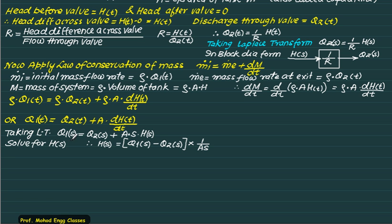So what I do is that I will shift this Q2(s) on the left hand side. So this is Q1(s) minus Q2(s) and then whole this term gets divided. So I prefer to put in the first bracket multiplied by 1 by AS. So that I can represent this as a summing point and then a block. So this is a summing point multiplied by block will be equals to H(s).